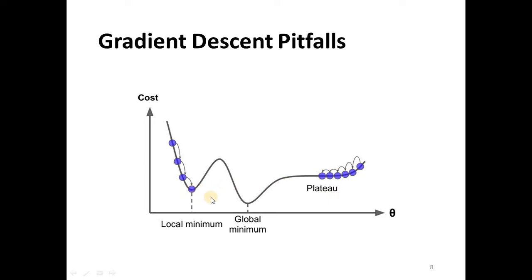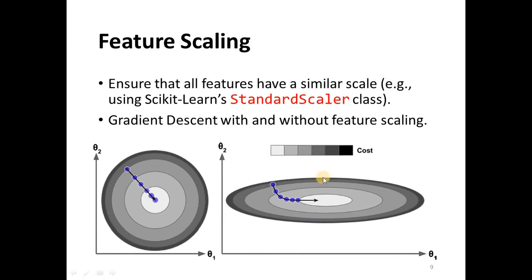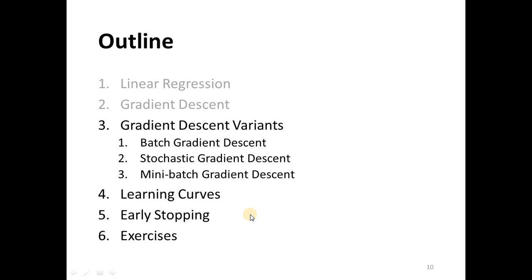There are two pitfalls for the gradient descent algorithm: it can get stuck in local minima instead of the global minimum, or it can get stuck in a plateau. We need good feature scaling before using the gradient descent algorithm in order to reach the solution faster. The features should be normalized — the scale of one feature should not be larger than the scale of another feature.